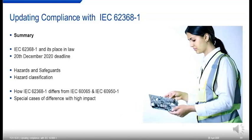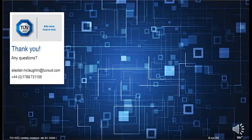In summary, we've looked at 62368 and its place in the law, in particular the 20th of December 2020 deadline. We've looked at hazards and safeguards and how we classify hazards across different types. And we've looked at how 62368 differs from 60065 and 60950-1, particularly some special high-impact cases. That's everything in my presentation. Now we're going to be taking some questions — thank you all very much for listening.